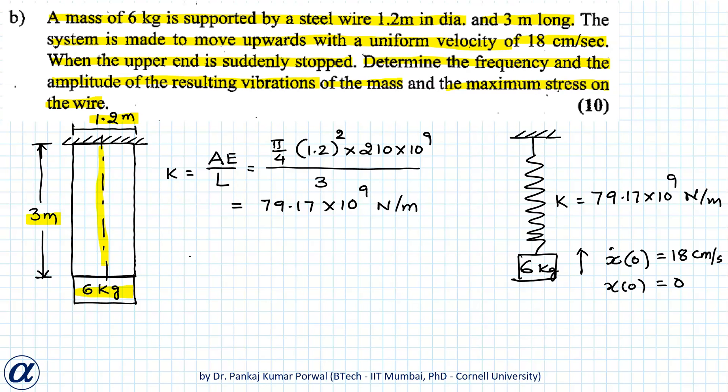We know that the equation of motion for simple harmonic motion of spring mass system is m x double dot plus k x equals to 0. The solution of this equation of motion is x equals to A sin ωt plus B cos ωt.